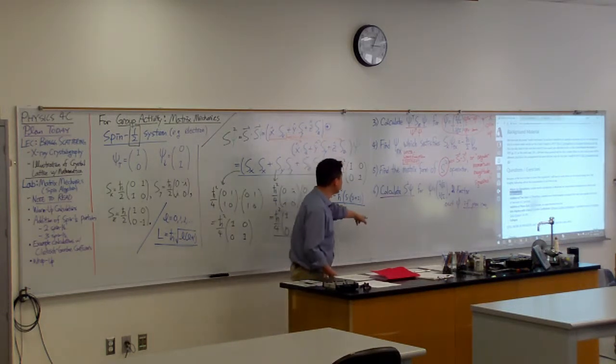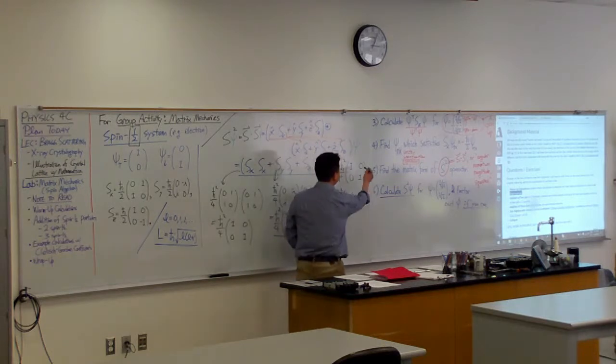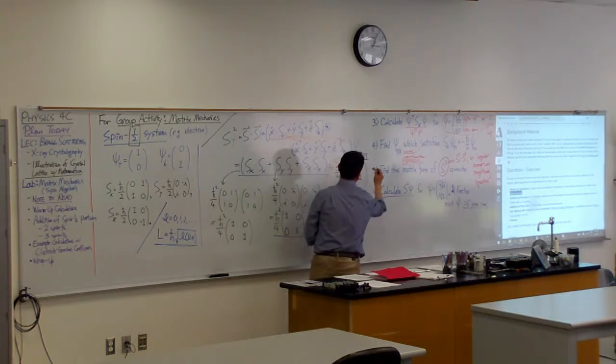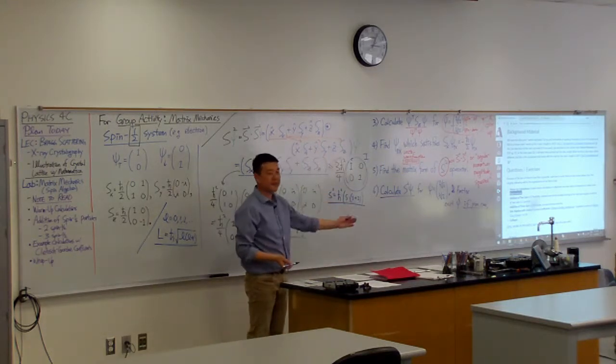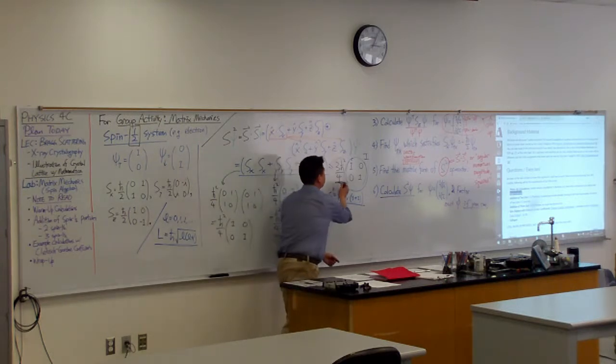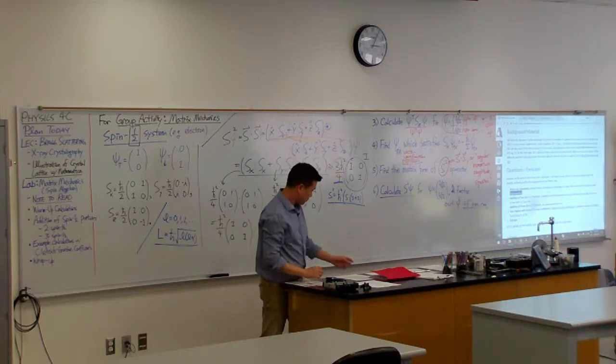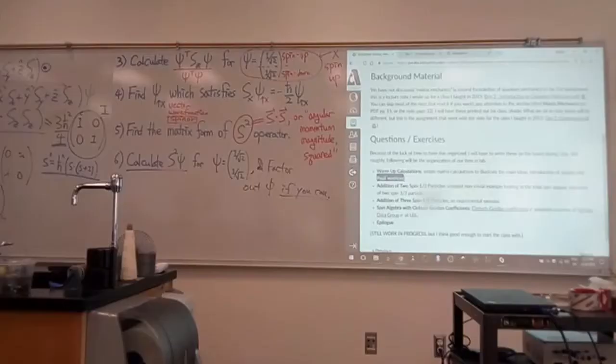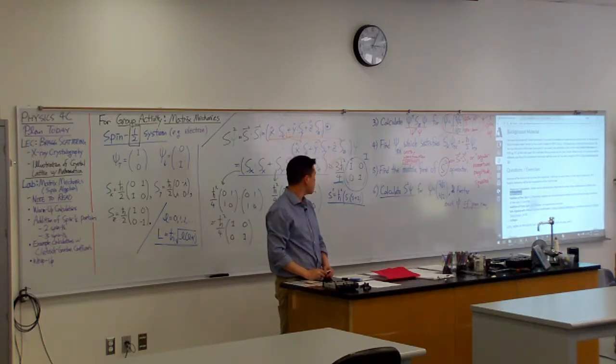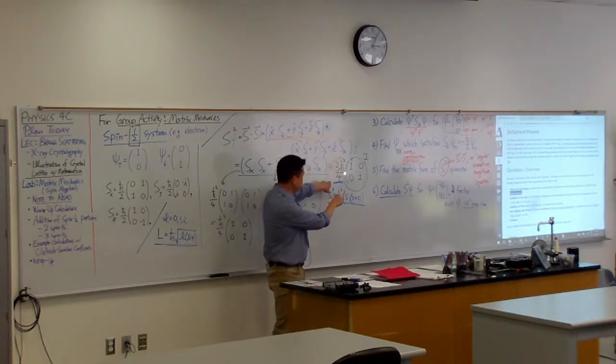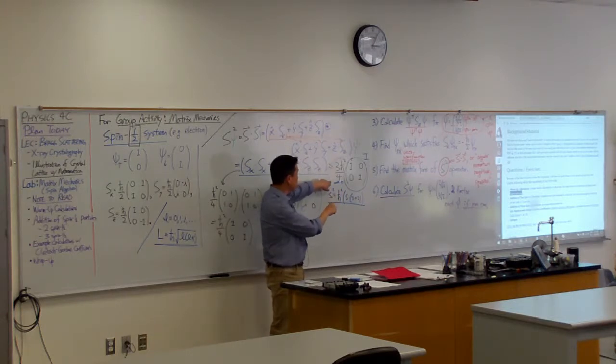You kind of guessed the answer here from saying that this is an identity matrix. You're just going to get the same state back with this coefficient here, which means this particular state, which is a mixture of spin up and spin down, still has this spin angular momentum magnitude. It doesn't have spin zero.